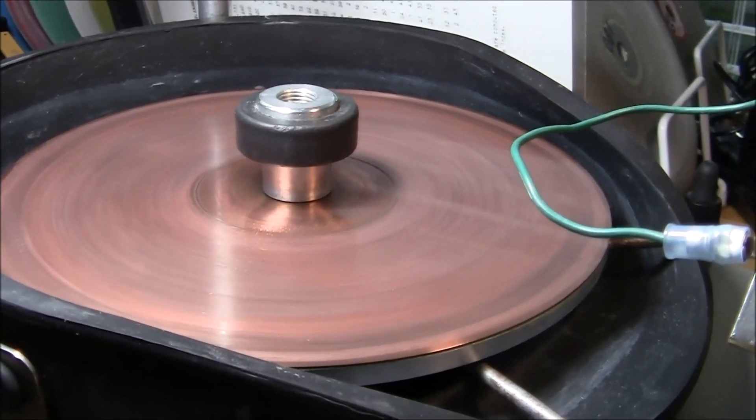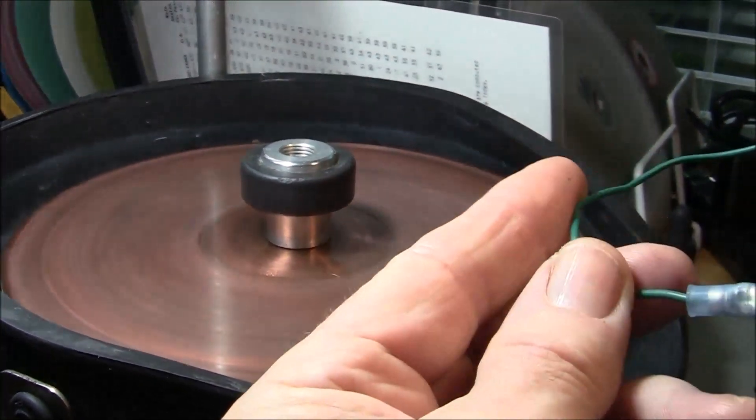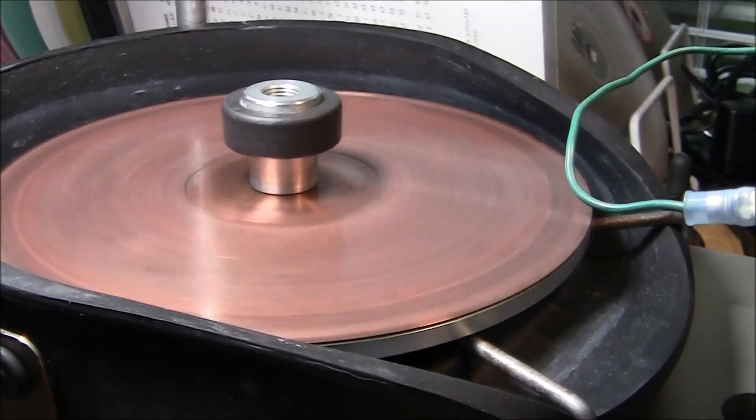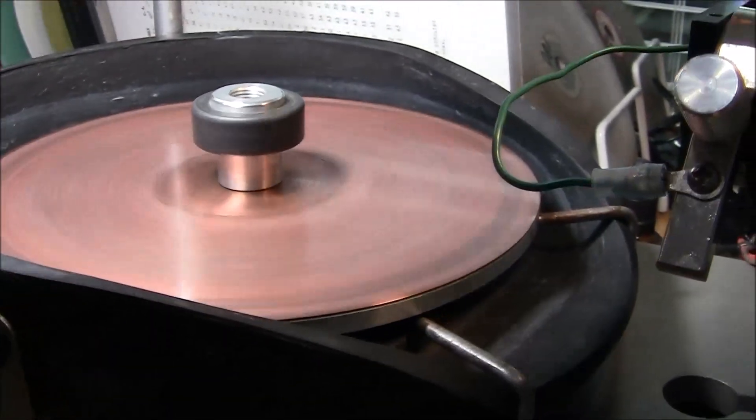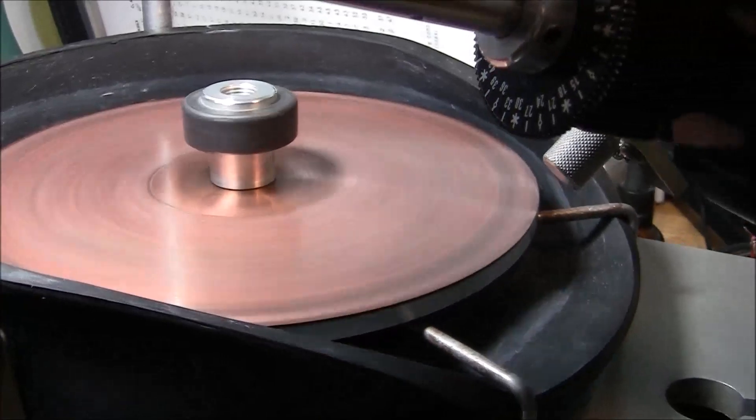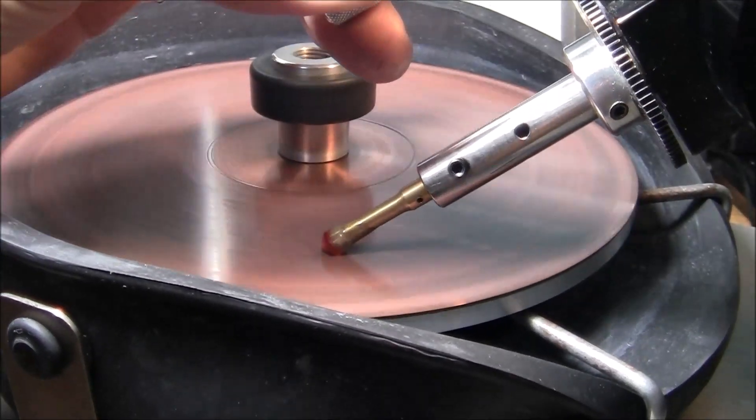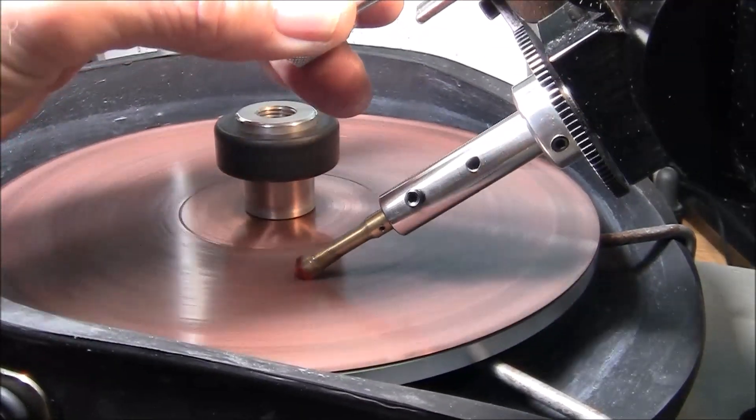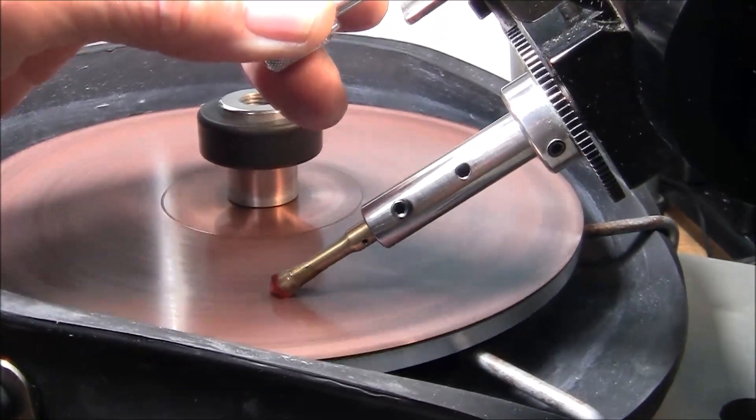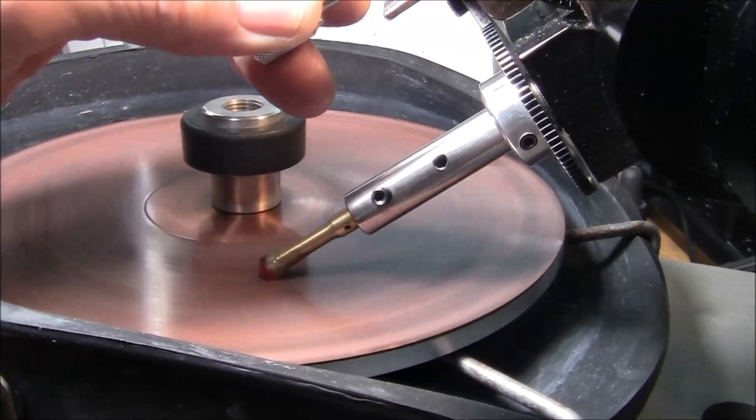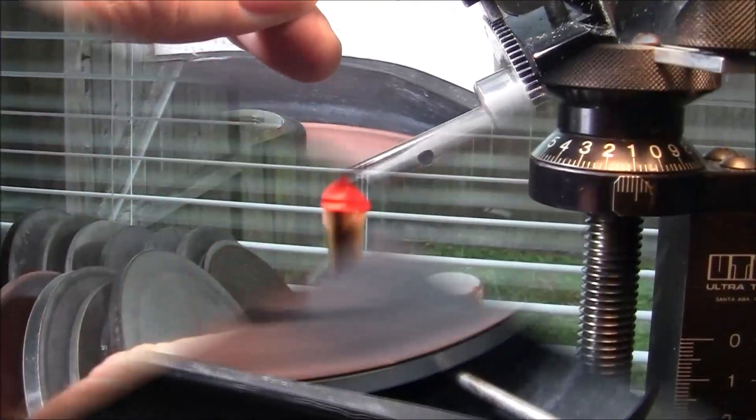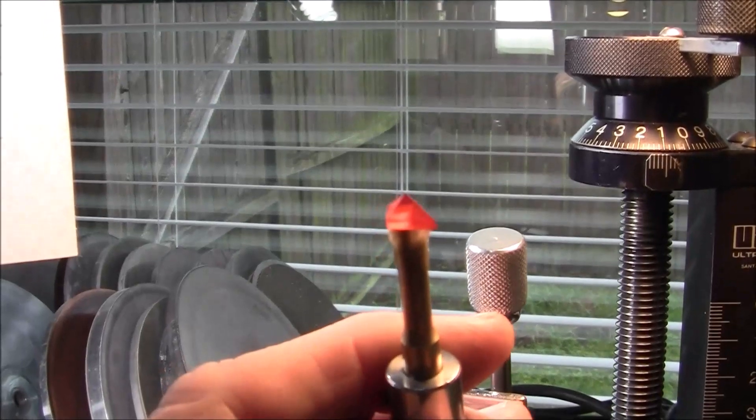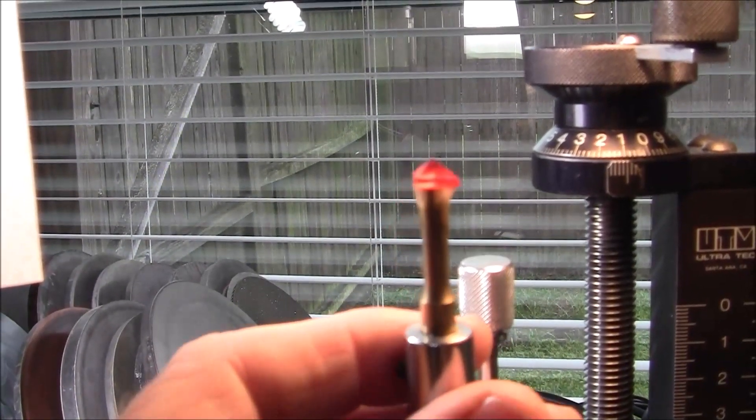I put on the copper lap and I'm going to use 8,000 grit paste to do the pre-polishing. I'm going to get started on 3,000. We're pre-polished with 8,000 and we're going to do the final polishing on the bat lap with 60,000 diamond grit.